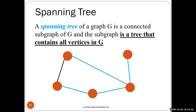A spanning tree of a connected graph G is a subgraph that is a tree containing all vertices of G. For example, using the blue edges in a connected graph gives one spanning tree — starting from any node, visiting all vertices. Any node can be considered the root because it's a tree, with all connected nodes as children except the parent.